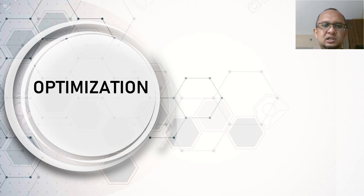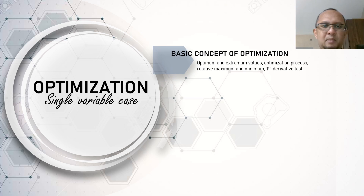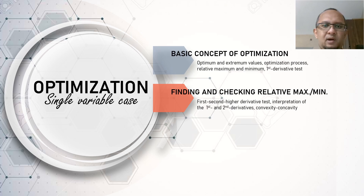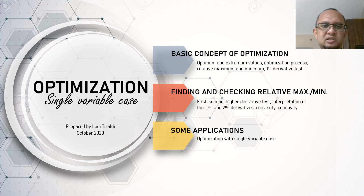At the moment, let's begin with the simplest optimization — without constraint and with only one variable. We start as usual with the basic concept, then followed by explanation about how to find and check relative maximum or minimum conditions, including attempts to satisfy certain necessary and sufficient conditions. Then we will check the application in some optimization problems and try to solve them all.